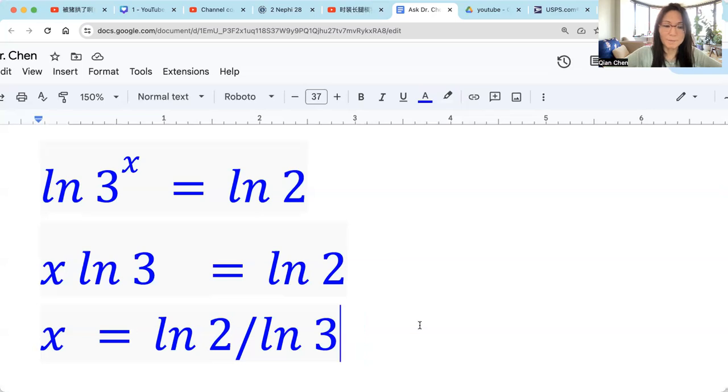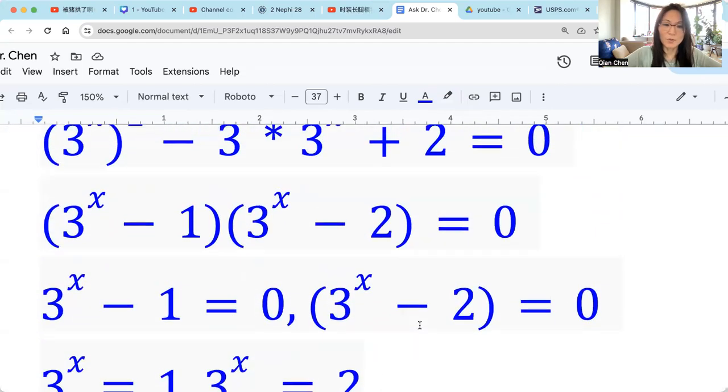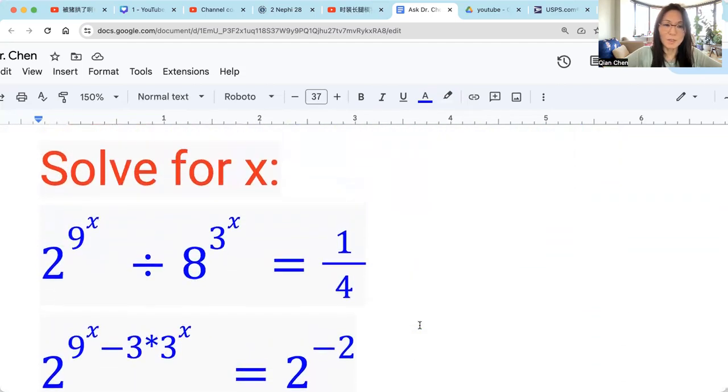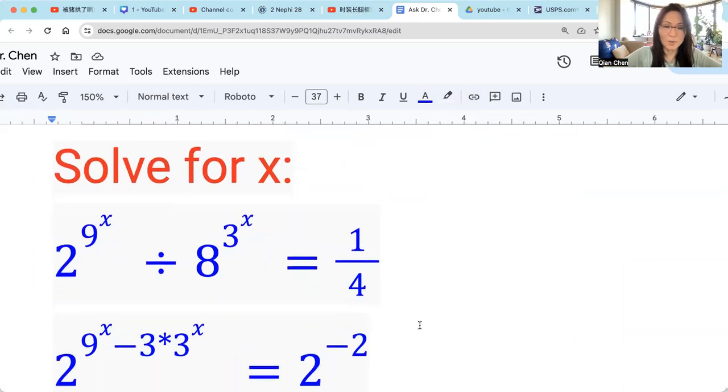Alright. So we have 2 solutions. 0 and ln2 divided by ln3. So I would suggest you to check. Put x equals to ln2 divided by ln3 to see if the equation holds. So it's an interesting question.